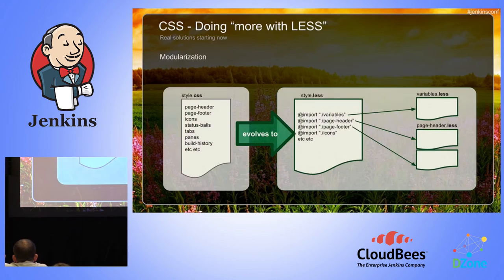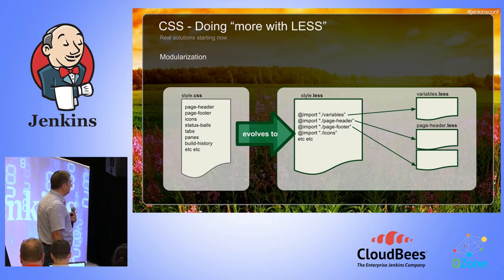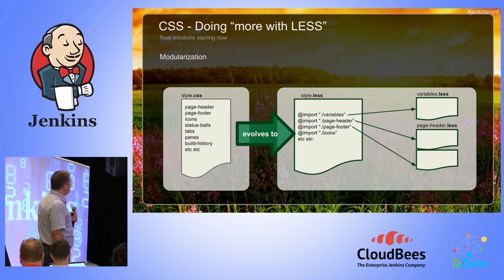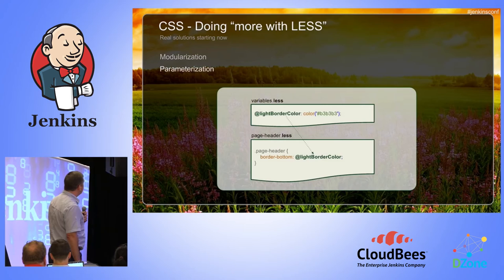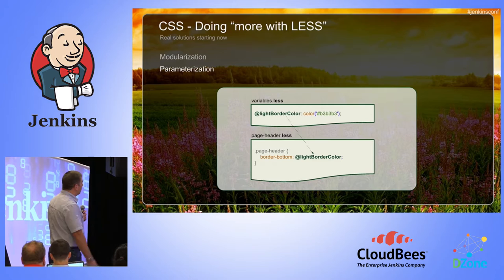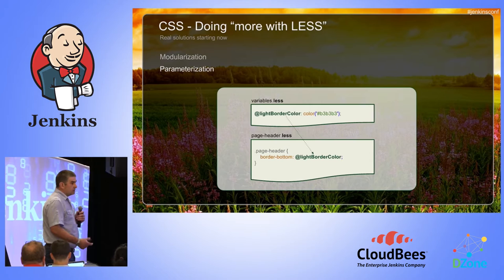One approach we've been looking at and had some success with is using LESS — a CSS preprocessor. LESS allows us to actually modularize the CSS, so rather than having one big CSS file with all the styles, we can break it out into more logical CSS components. The second thing LESS allows us to do is parameterization — centralizing things like colors, background colors, border widths, and border radii in one place, resulting in a more consistent look and feel. Variables can be used instead of raw color values.